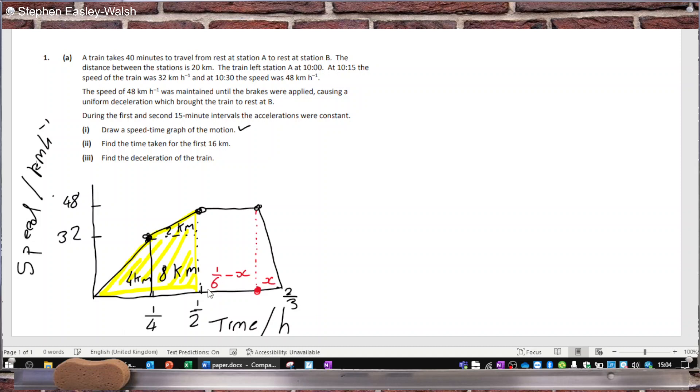So if you add this distance up here, that's half an hour plus 1/6 minus x, plus x, you should get 2/3. So 1/2 plus 1/6, yeah, 2/3. Okay, so let's calculate now.